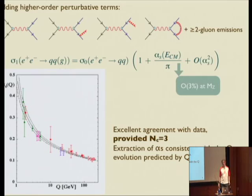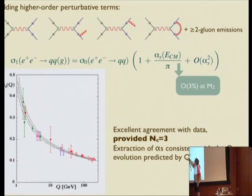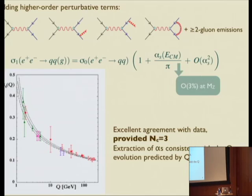The emission of one gluon is a very small correction. The appearance of alpha_s, which depends on the center-of-mass energy, means that by looking at e+ e- going to hadrons as a function of electron beam energy we can monitor the running of alpha_s. The data points obtained agree very well with the analytic prediction for the running of alpha_s, confirming the scheme is perfectly consistent.